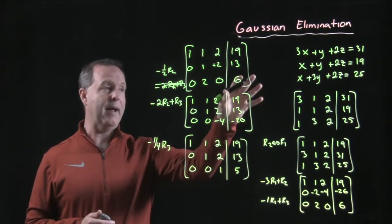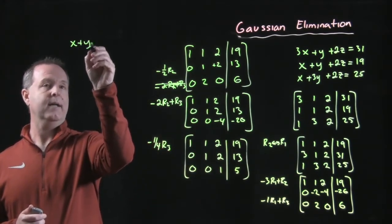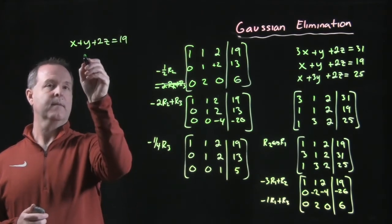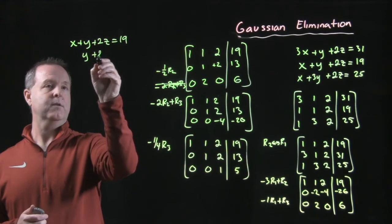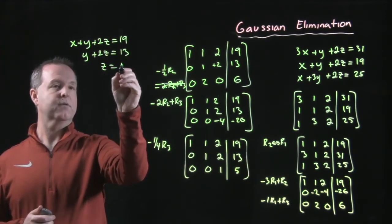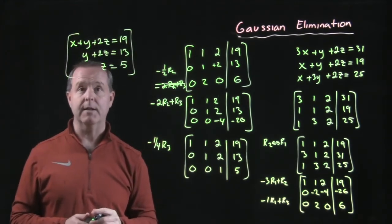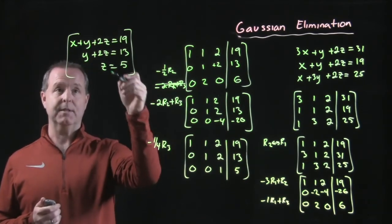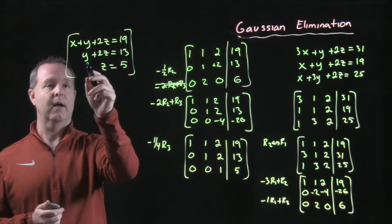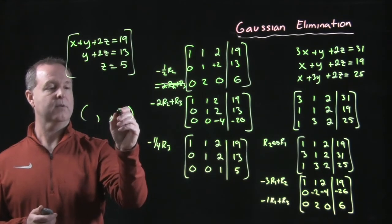Let's convert it back and see what we have. We would have x plus y plus 2z equals 19. Y plus 2z equals 13. And then z equals 5. The solution from there is just a simple process of back substituting. If z equals 5, then y plus 2z, that would make y equals, z equals 5.